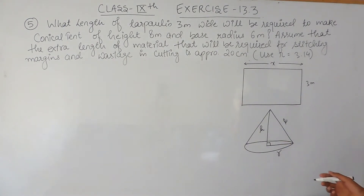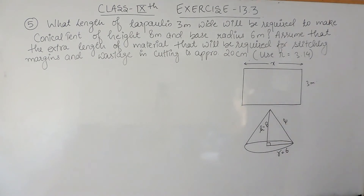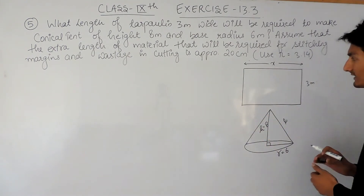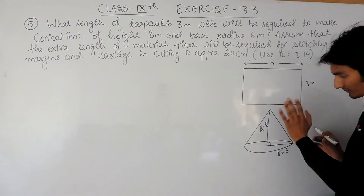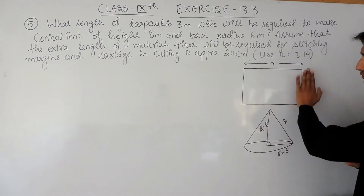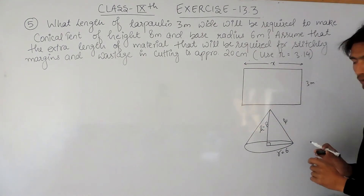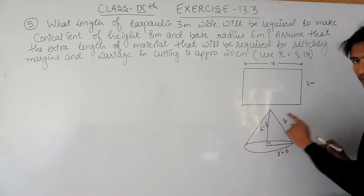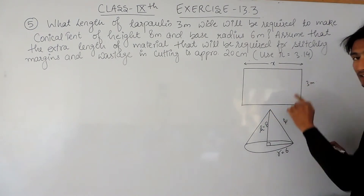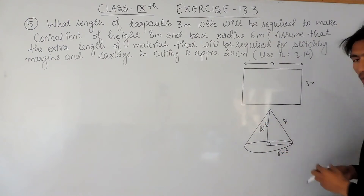The height given is 8 meters and the radius is 6 meters. We use this rectangular tarpaulin to make the conical tent, so the area of the tarpaulin will be equal to the curved surface area of the conical tent, because the cloth is used to form the curved surface.